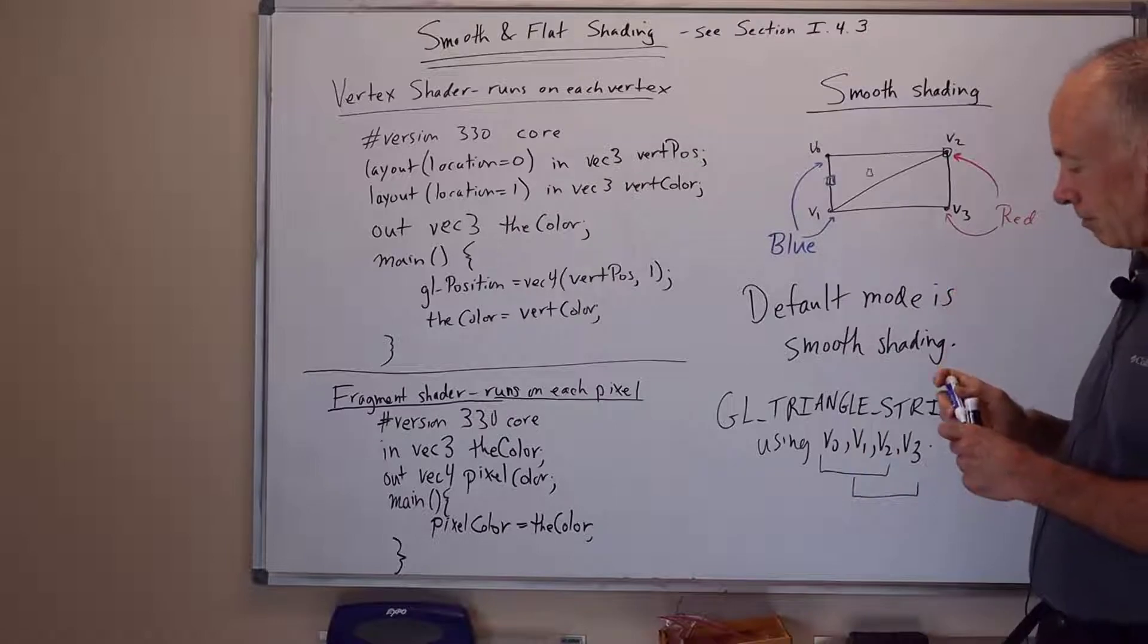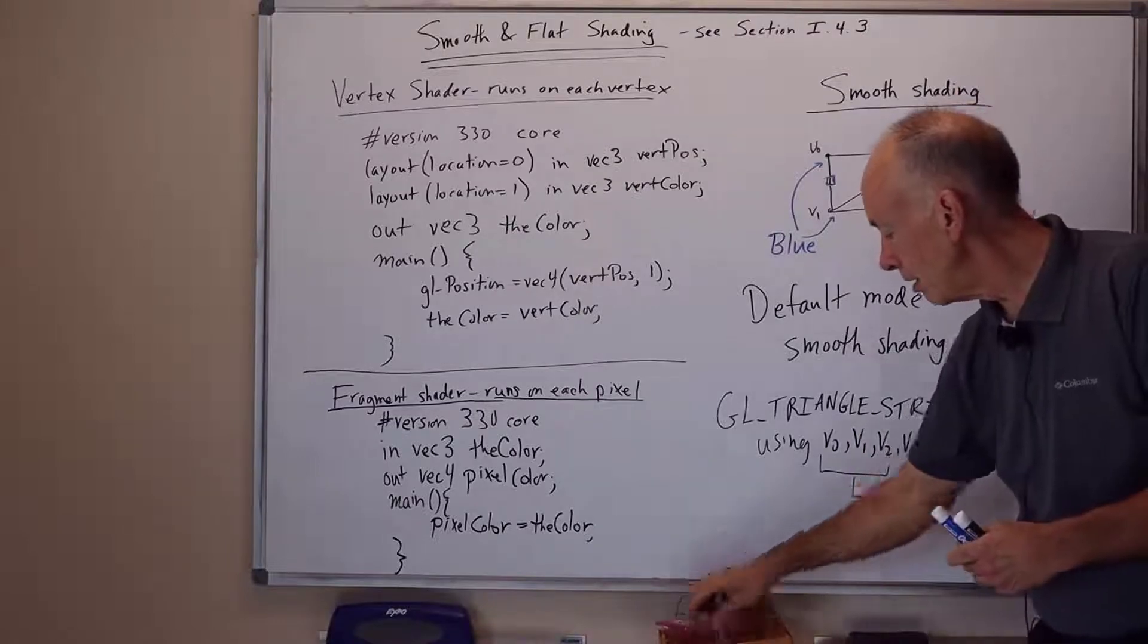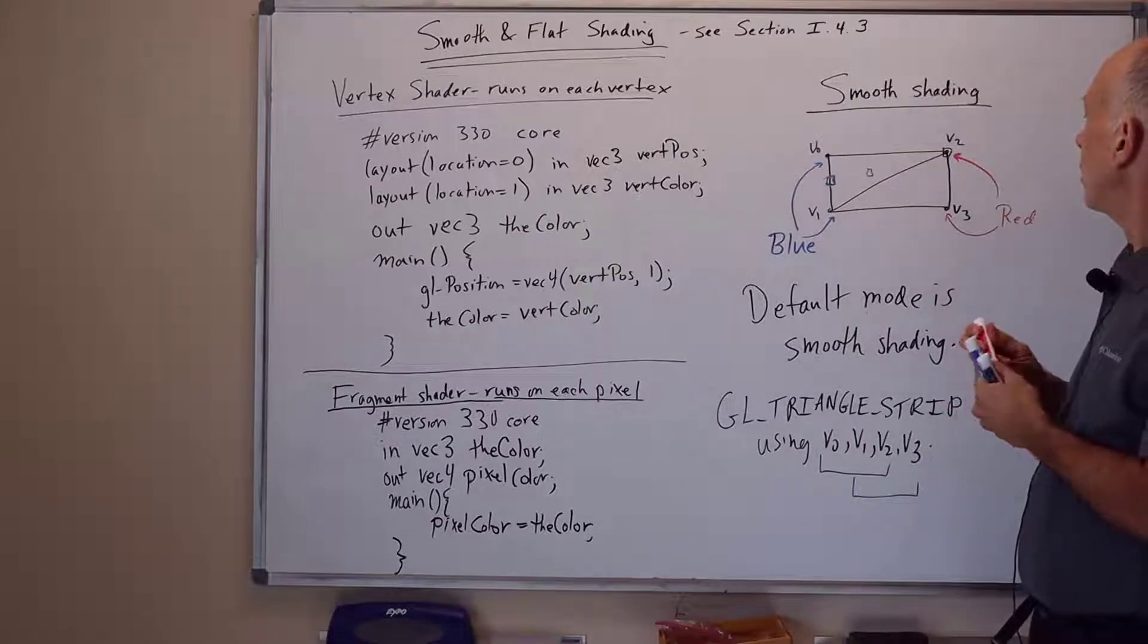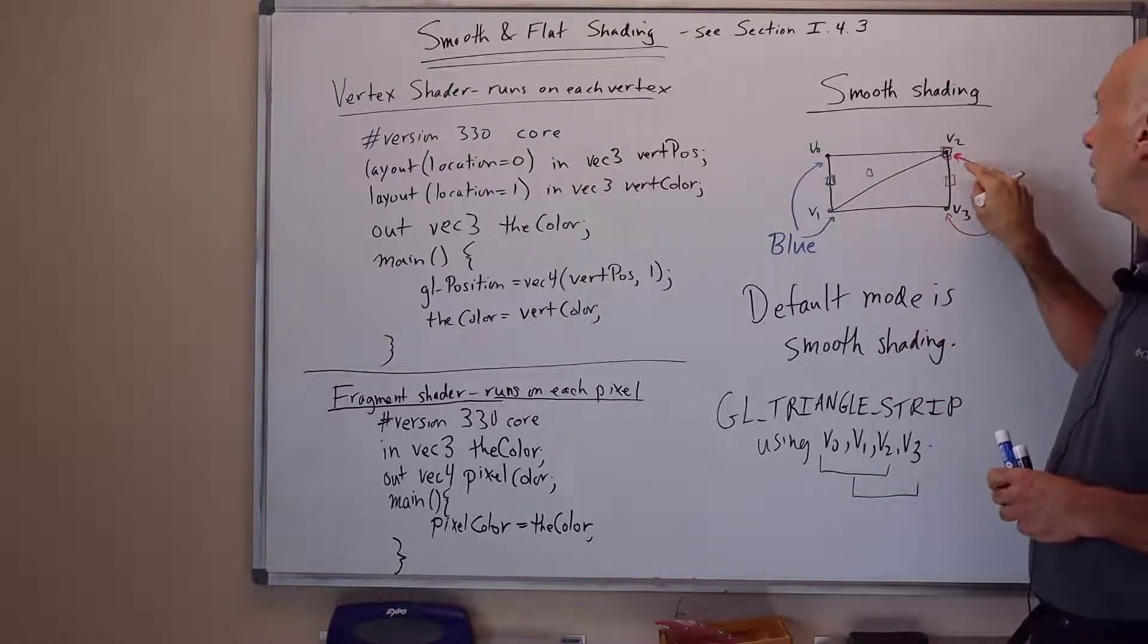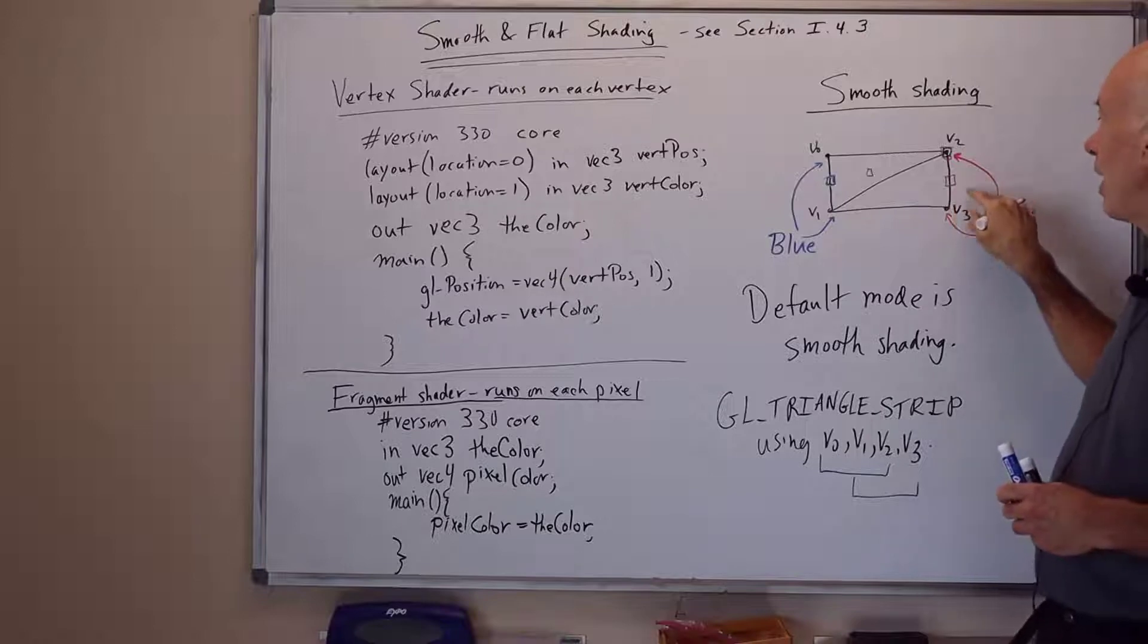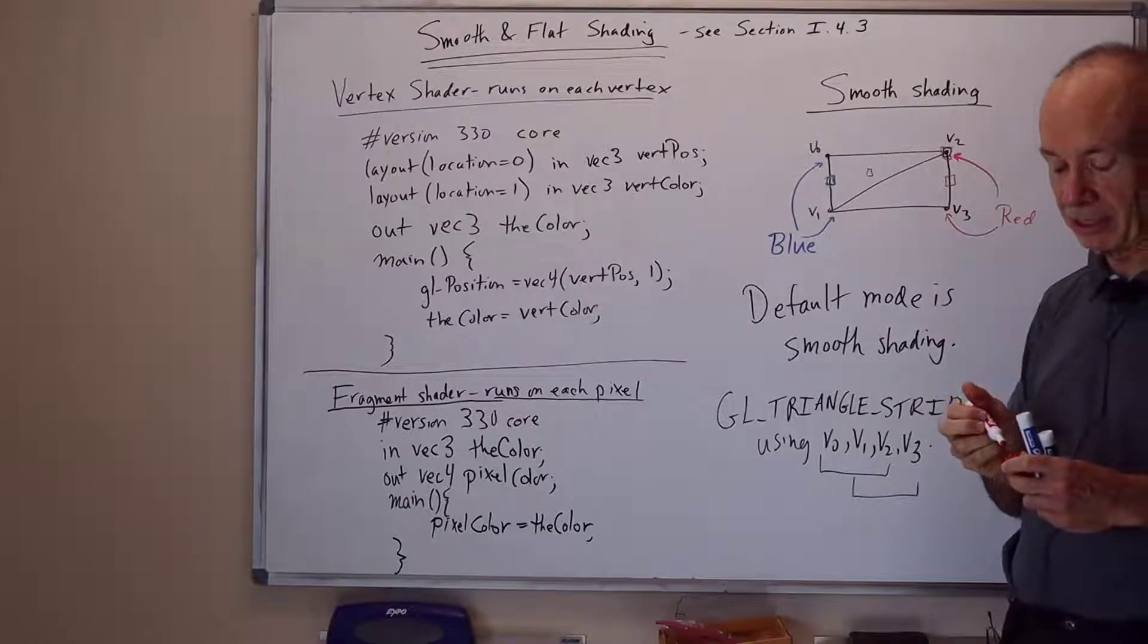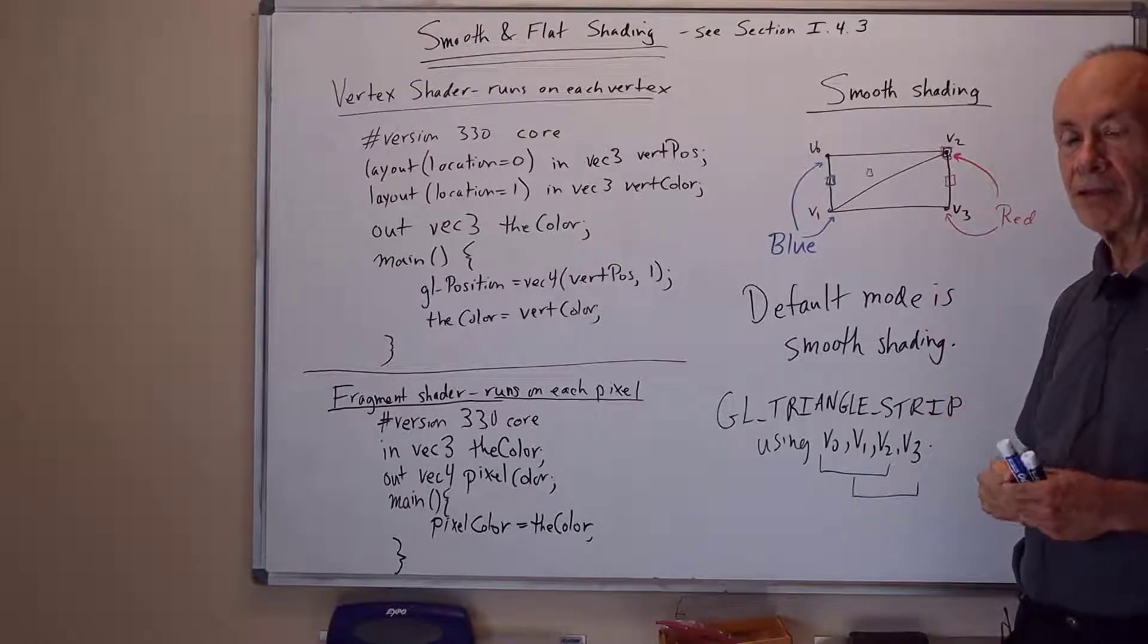When it's run on a pixel over here, V2, or on the second triangle, a pixel along here, the color that's passed to the fragment shader will be the average of the colors on the adjacent vertices of the triangle.